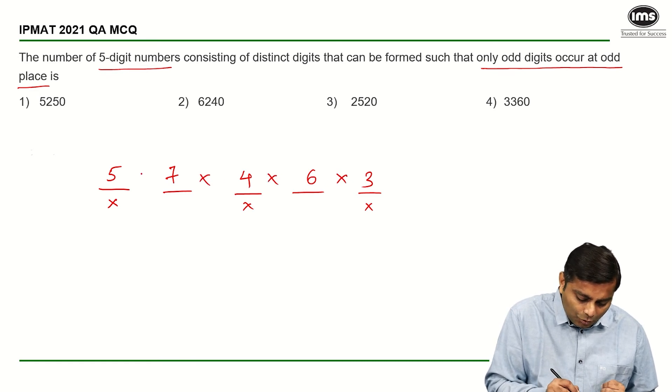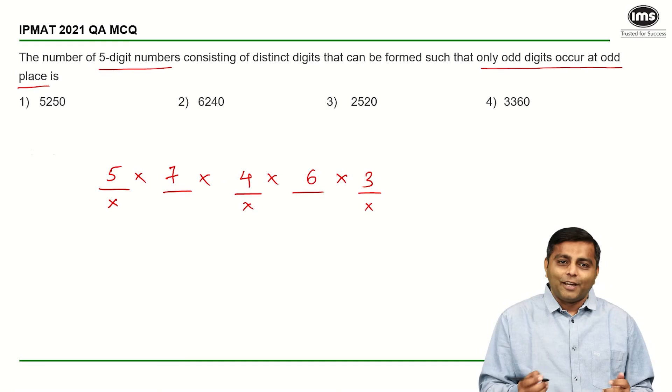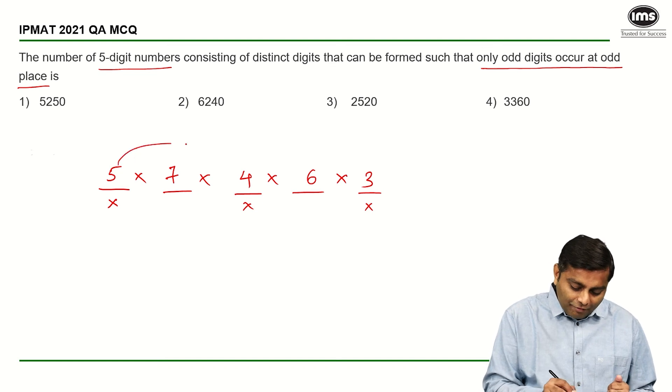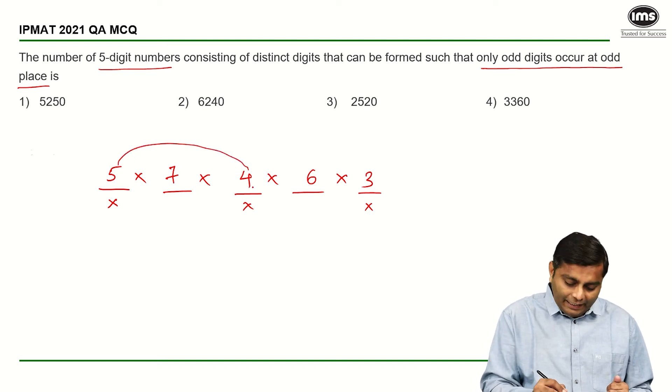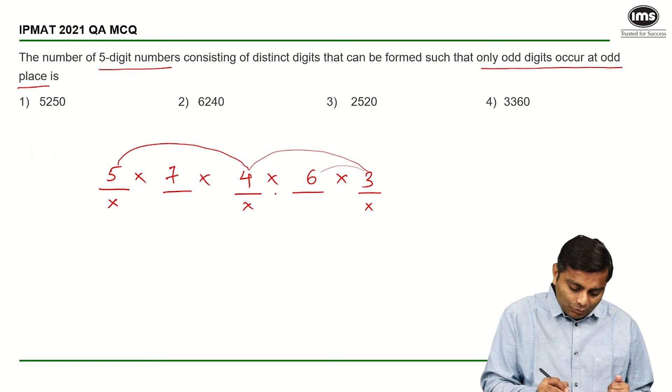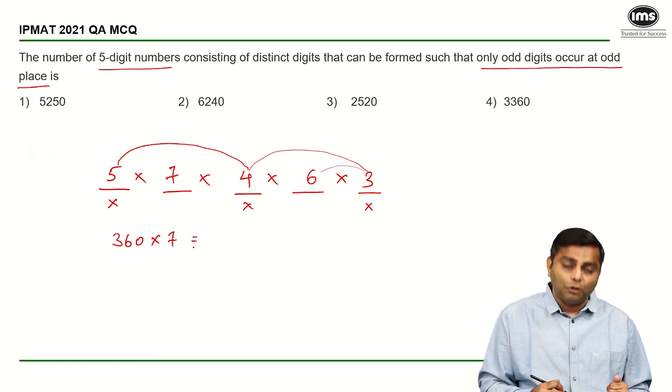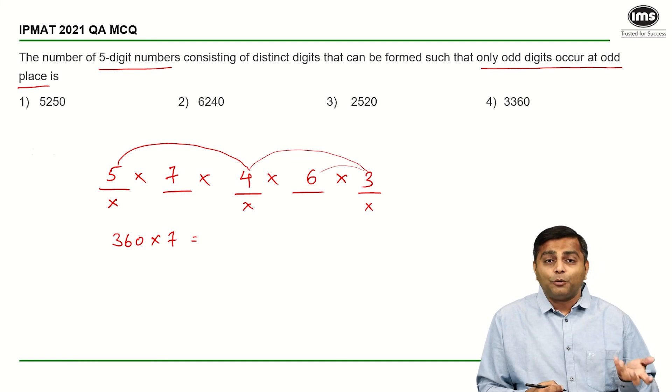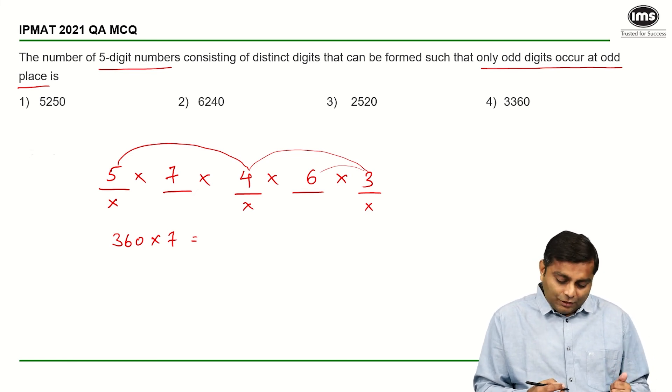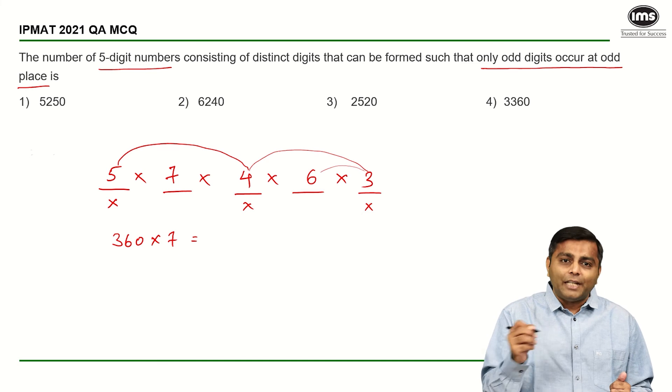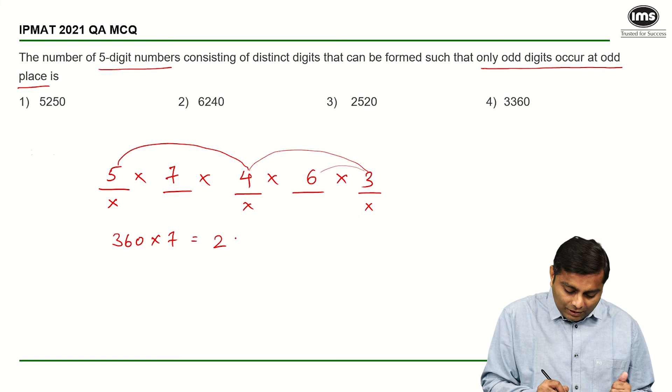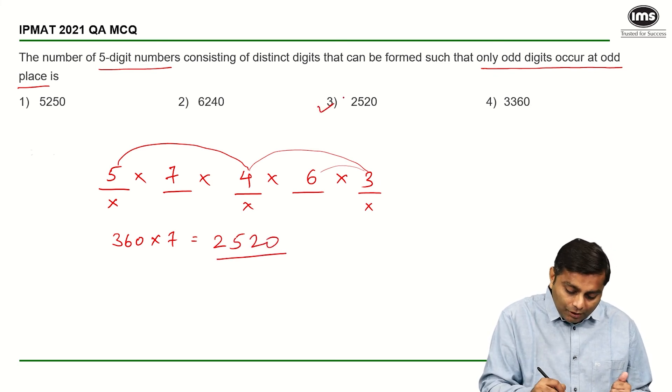If I just multiply, I should be able to get to my answer. So going to the calculation: 5 into 4 should give me 20, 20 into 3 gives me 60, 60 into 6 is 360. So 360 into 7 is what I want to calculate. So I am obviously going to calculate only 36 into 7. So 30 into 7 is 210 and 6 into 7 is 42. So 210 plus 42 is 252. So my answer is going to be 2520, option number 3.